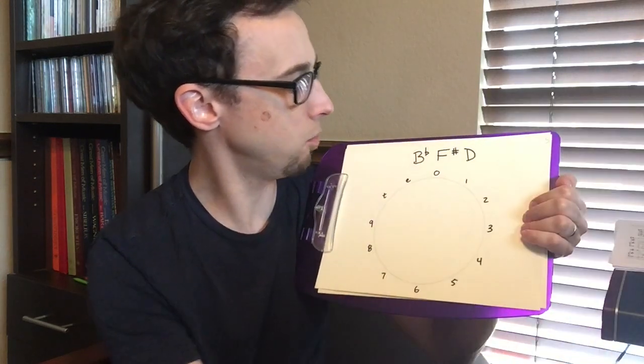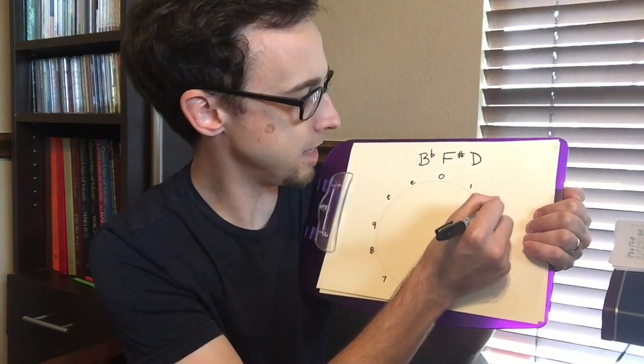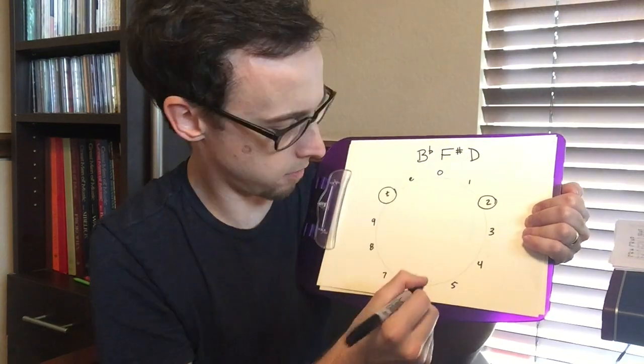And our last example is, well, what if you have this awesome pitch class set, which is B flat, F sharp, and D? What do we notice about this?